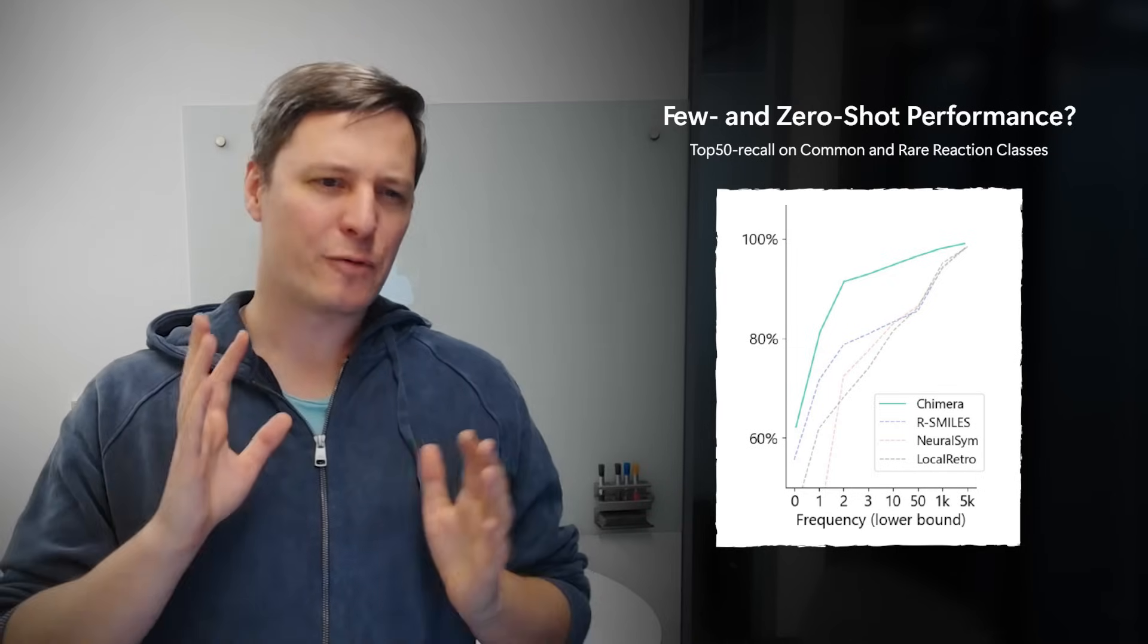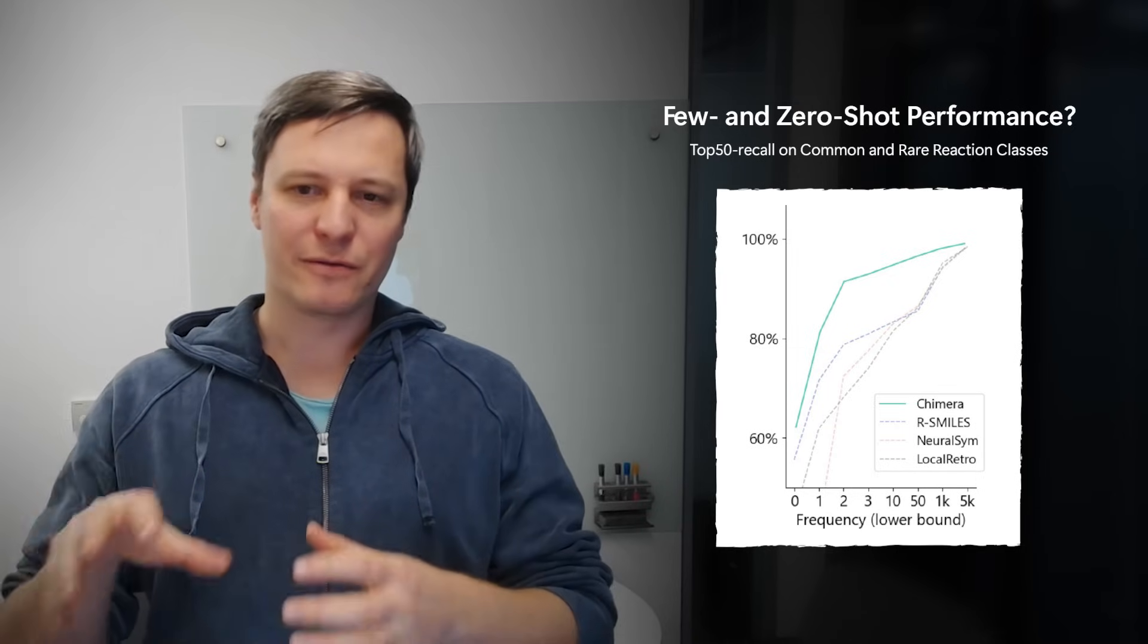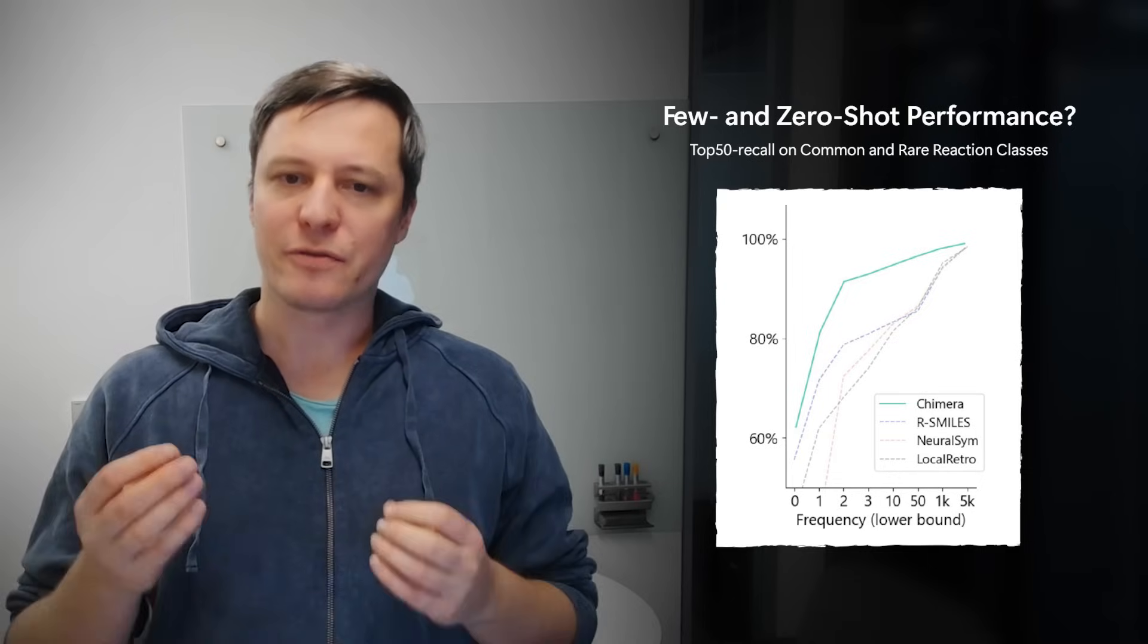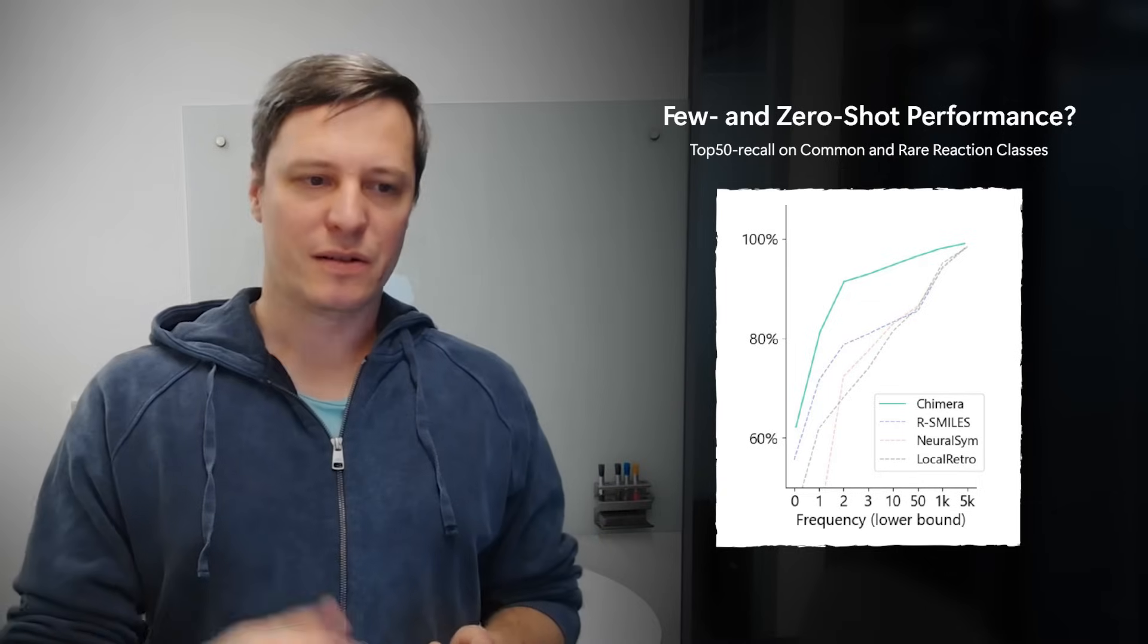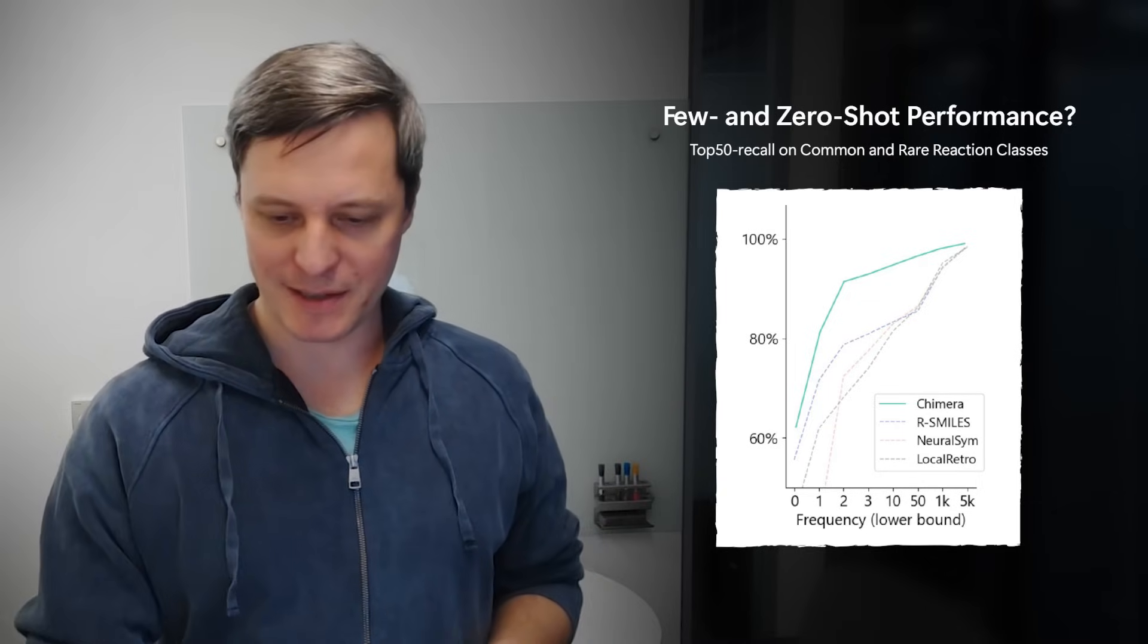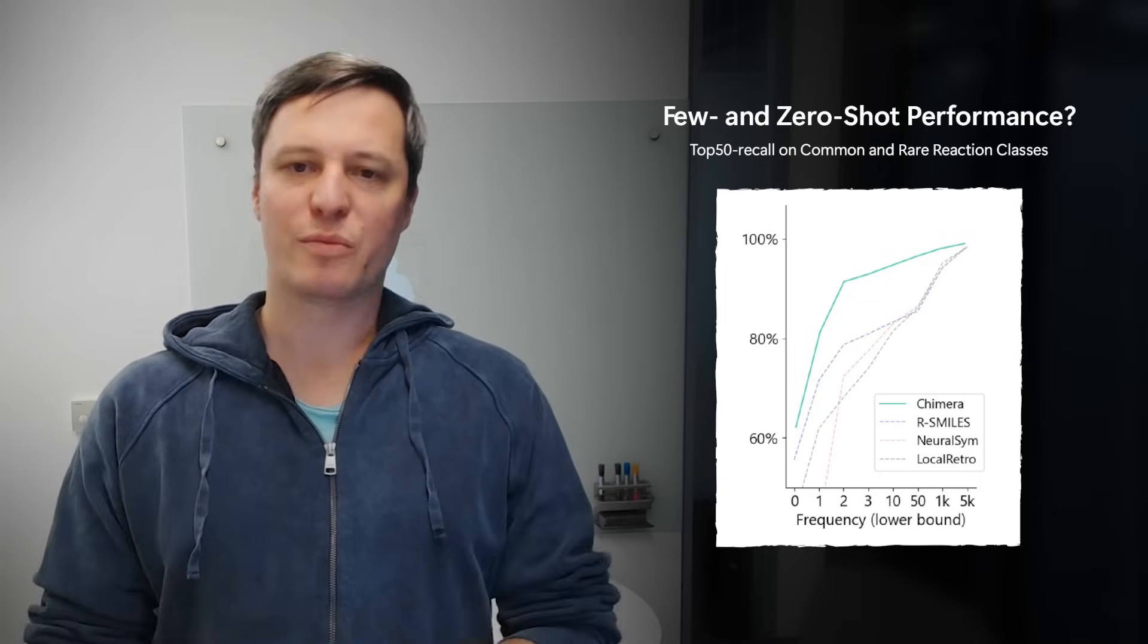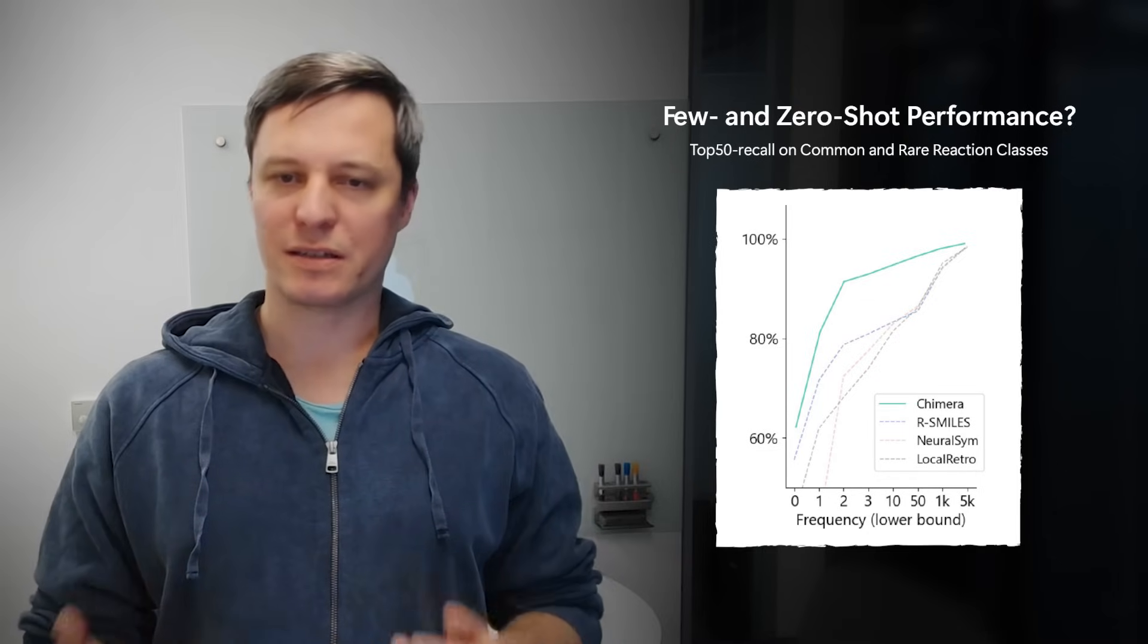And even if we just have one example in the training data, even for the zero-shot case, we can still achieve reasonable performance, whereas the baselines drop off completely.